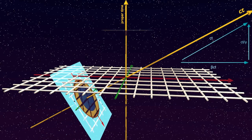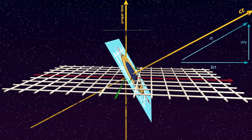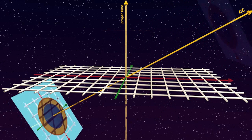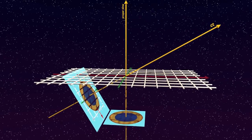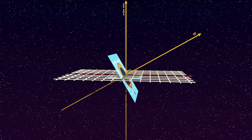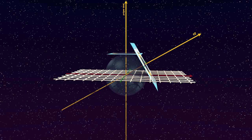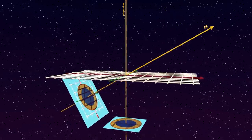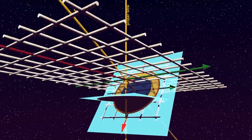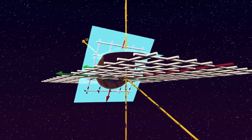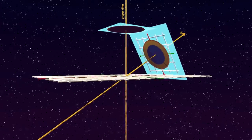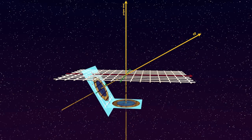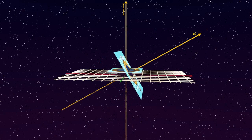That is, the moving lab, undistorted, slides at the regular time rate along a tilted time direction. At the same time, the stationary lab also slides along the proper time axis at the same normal rate. So in a proper time diagram, the moving and stationary labs slide past each other undistorted and at the same rate, along different time directions that are at an angle to each other in space-time.